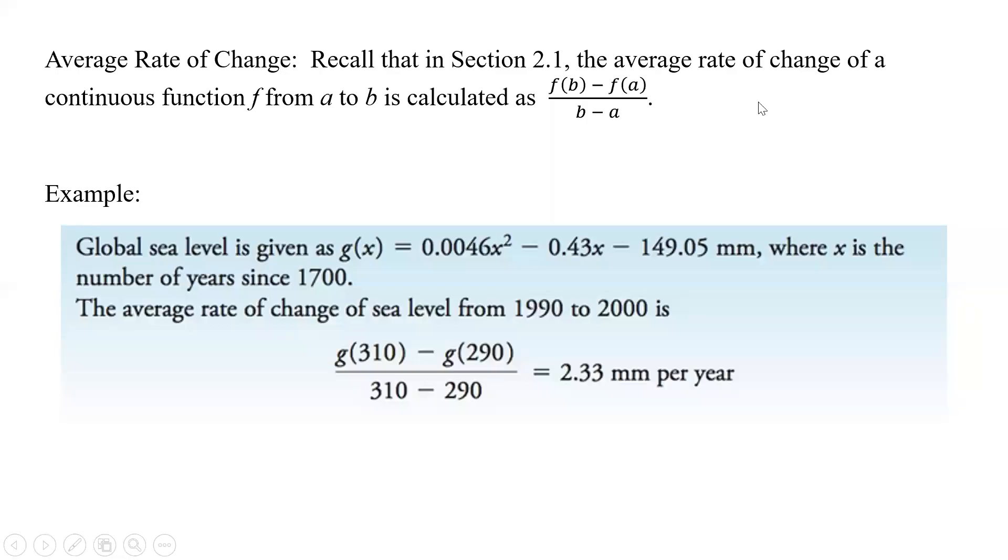Okay, now we're going to talk about average rate of change. If we go way back to chapter 2.1, the average rate of change of a function f from a to b is calculated as f of b minus f of a divided by b minus a.